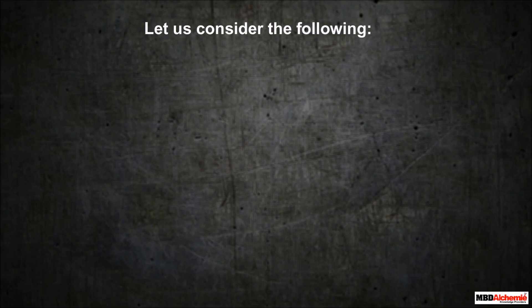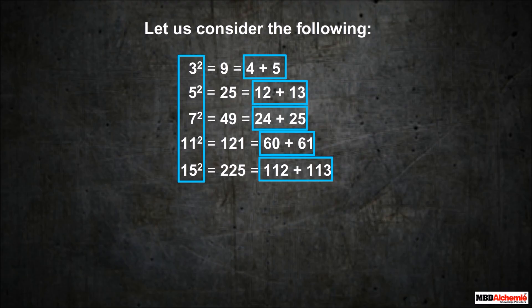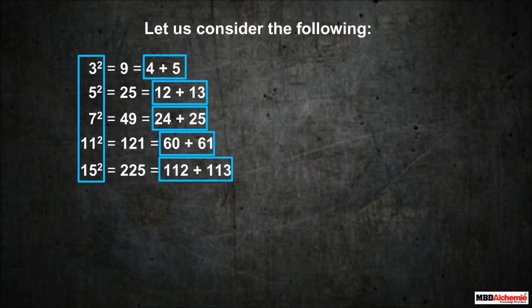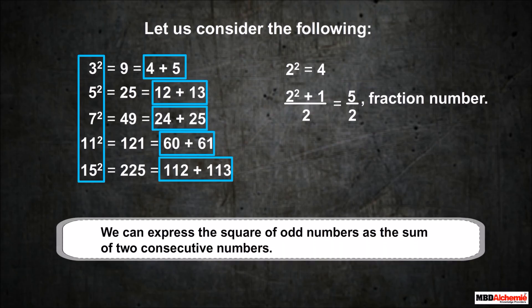Let us consider the following. We can express the square of odd numbers as the sum of two consecutive numbers. We find the first consecutive number by subtracting 1 and dividing by 2, and we find the other number by adding 1 and dividing by 2. Now, let us take the square of an even number — we find a fraction instead of a natural number. So, this pattern holds only for the square of odd numbers.